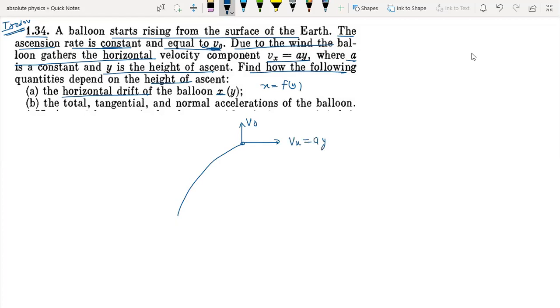First of all, this is given as dy by dt, that is equal to v0, which is constant. Similarly, dx by dt, the x velocity is equal to a into y. We have to find the first part, the x and y relations. So we can eliminate time here by dividing equation 1 by equation 2.